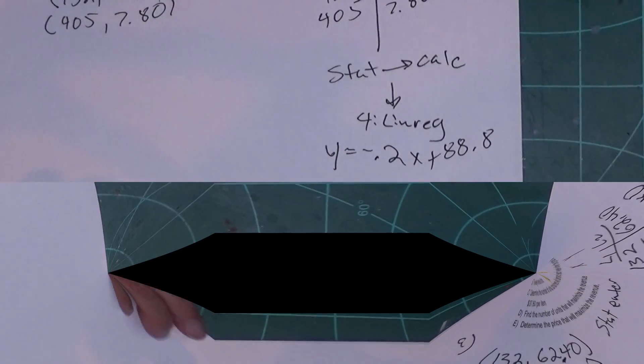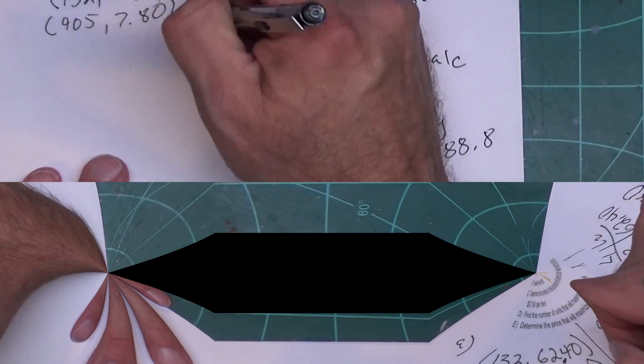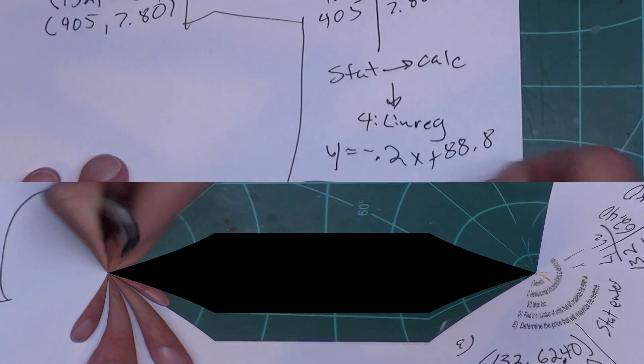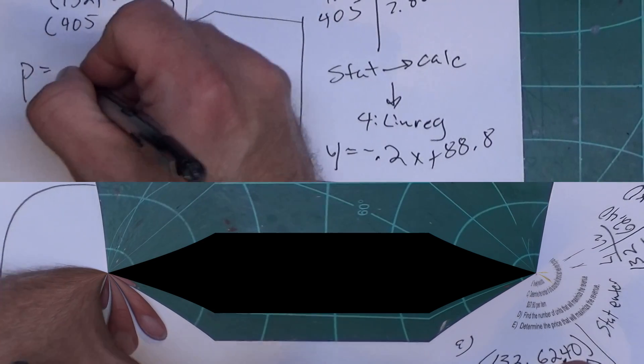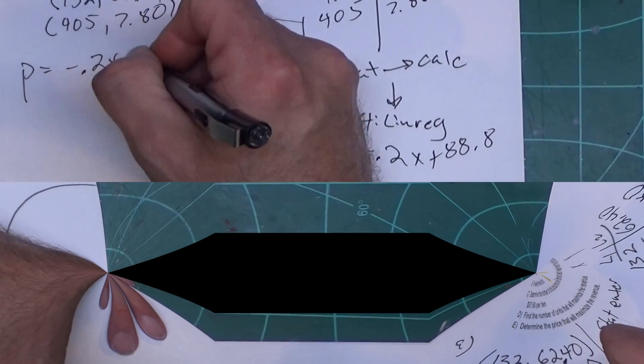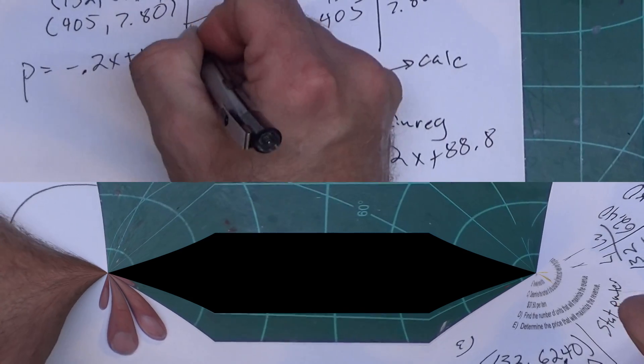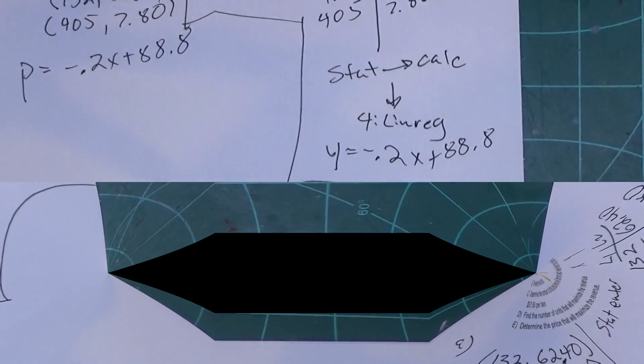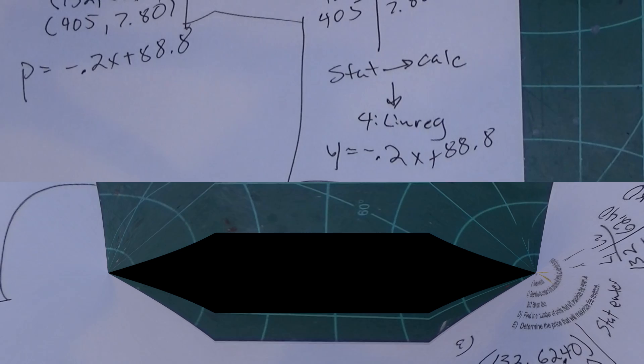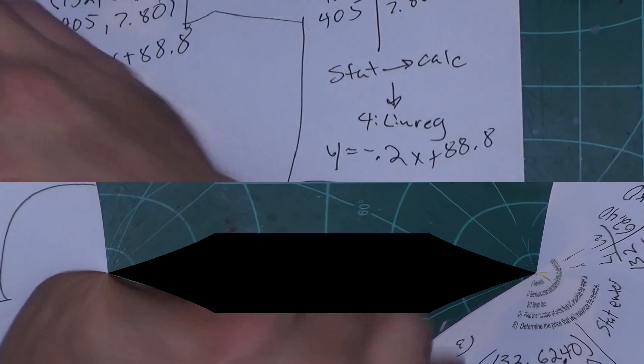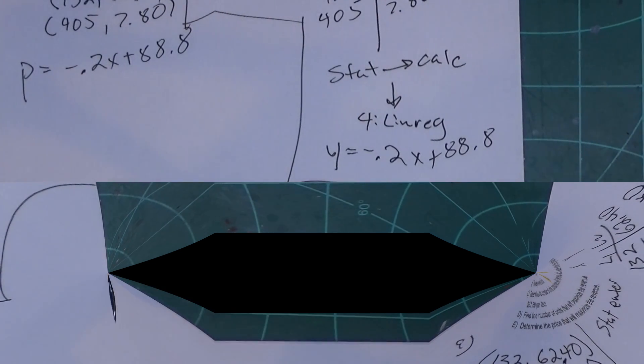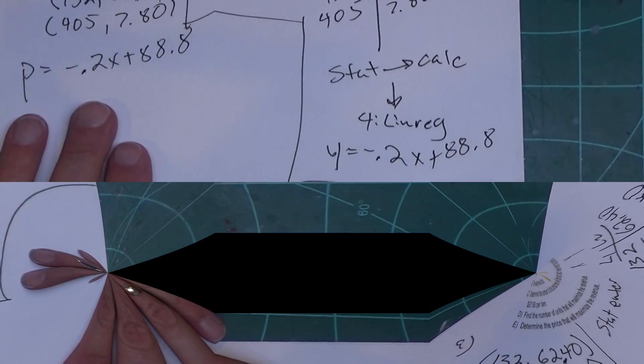So there's my equation for the line. This is a demand function. In math speak we would call this P equals negative 0.2x plus 88.8, because we have to use the proper letter or some of the math teachers take off like an excessive amount of points since you use the wrong letter. You're evil, I don't know. There's a couple of them at A&M that do that.